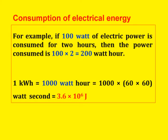Next, consumption of electrical energy. For example, if 100 watts of electric power is consumed for 2 hours, then the energy consumed is 100 × 2 = 200 watt-hour. 1 kilowatt-hour = 1000 watt-hour = 1000 × 60 × 60 watt-seconds = 3.6 × 10⁶ joules.